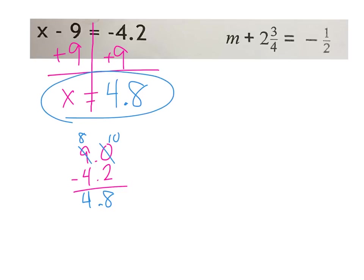Then we go to the next one: M plus 2 and 3 fourths equals negative 1 half. Keep yourself organized — break it apart so that you can see your two sides and keep them balanced. I want to isolate my M, so I need to get rid of that plus 2 and 3 fourths. The opposite of adding 2 and 3 fourths is subtracting it.